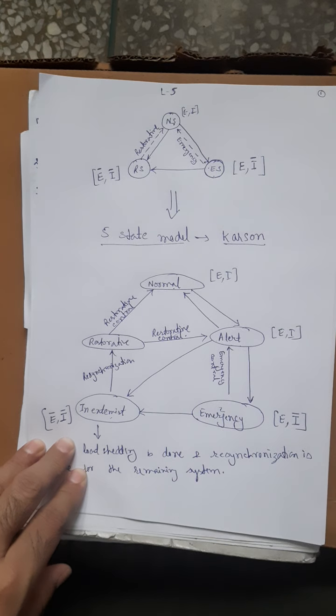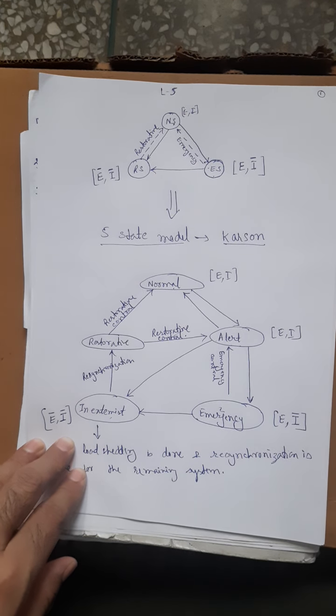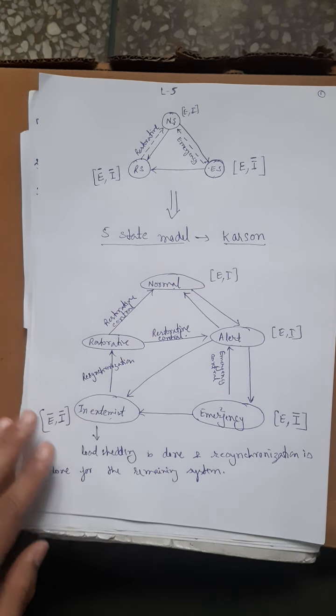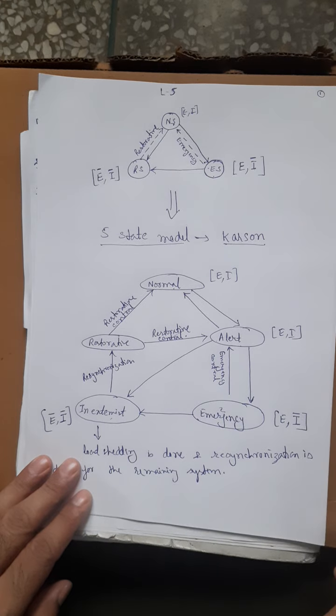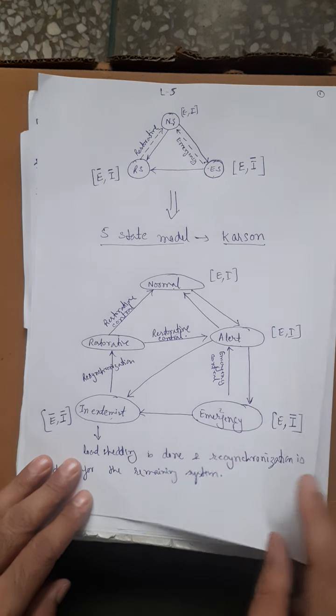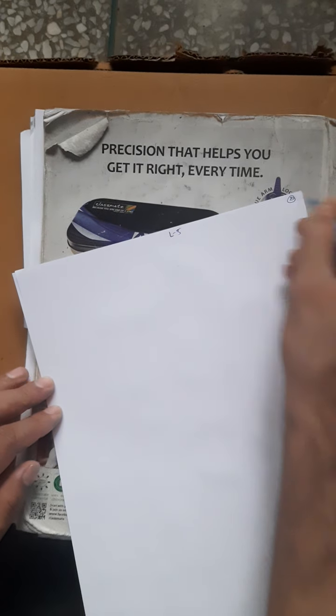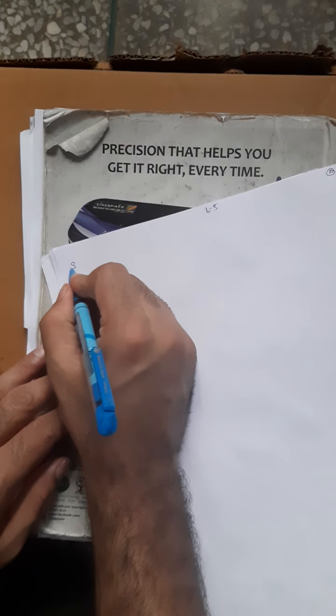This was all about the five-state model of a power system. Next, I will tell you about security constraint optimal power flow — small but very helpful concepts. This is lecture five, page number two.